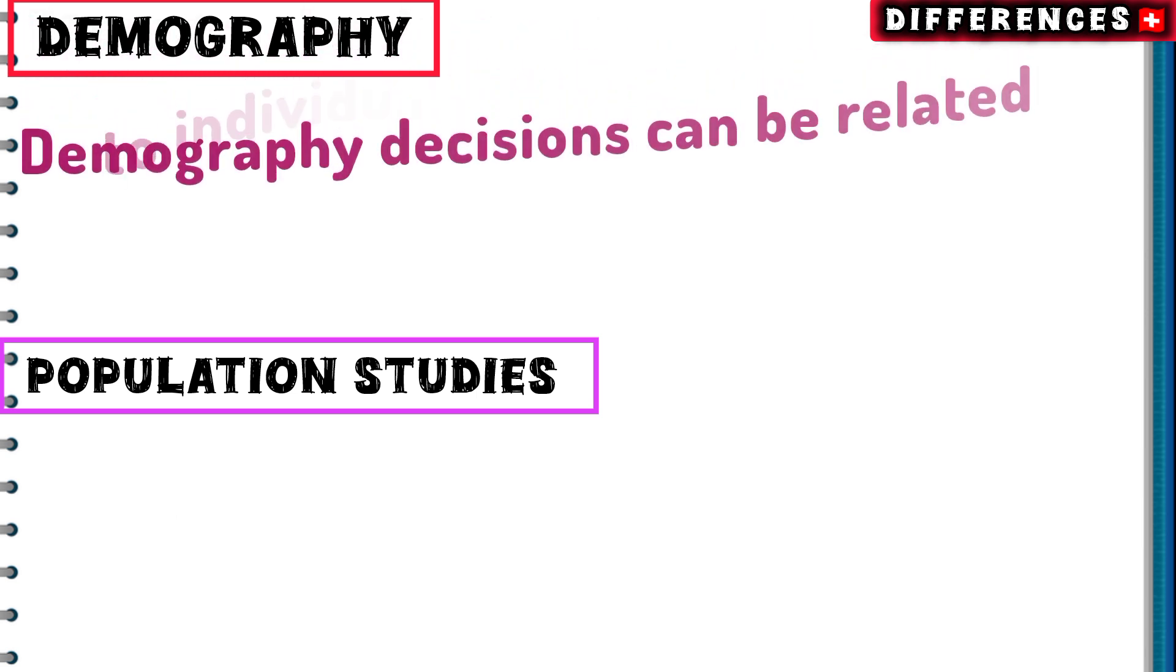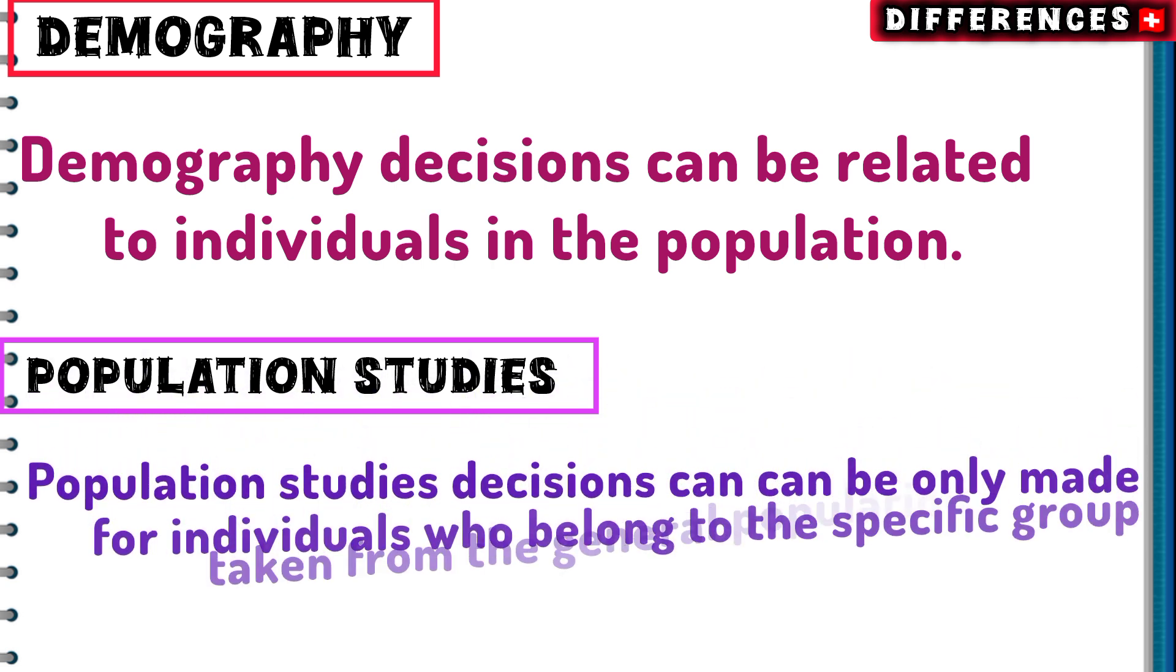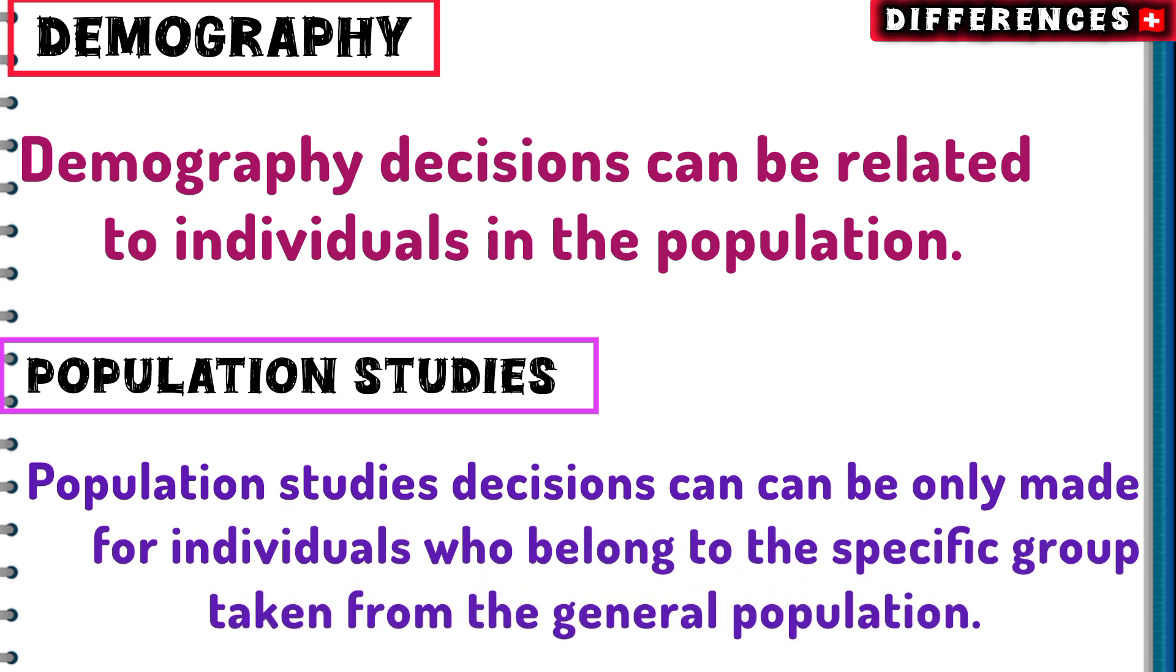Demography decisions can be related to individuals in the population. Population studies decisions can only be made for individuals who belong to the specific group taken from the general population.